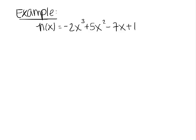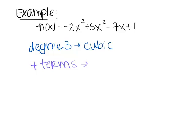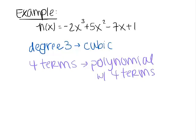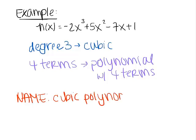Let's take a look at one more. This function is definitely in standard form — I've got my degrees going in descending order and I have all distinct terms. The highest degree in this case is 3, which means it's cubic. Now how many terms do I see here? I see 4 terms. Once you hit 4 terms, you don't really have a special name anymore. So in this case I would say this is a polynomial — poly means many. We know exactly how many terms it has, so the name of this h of x function is a cubic polynomial with 4 terms.